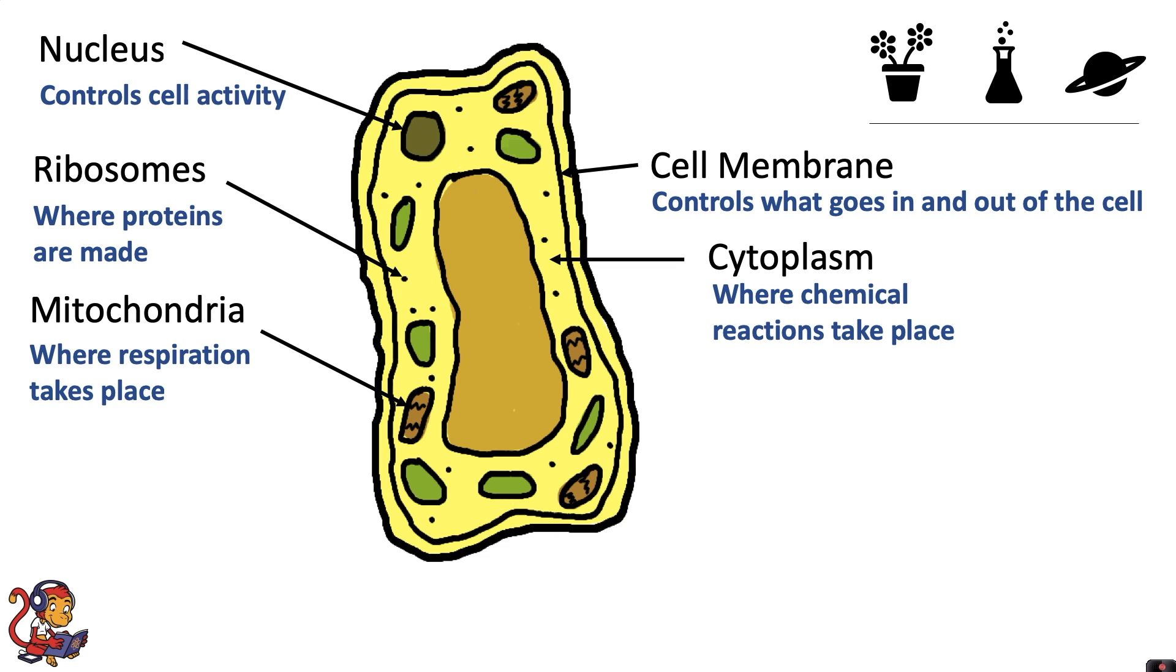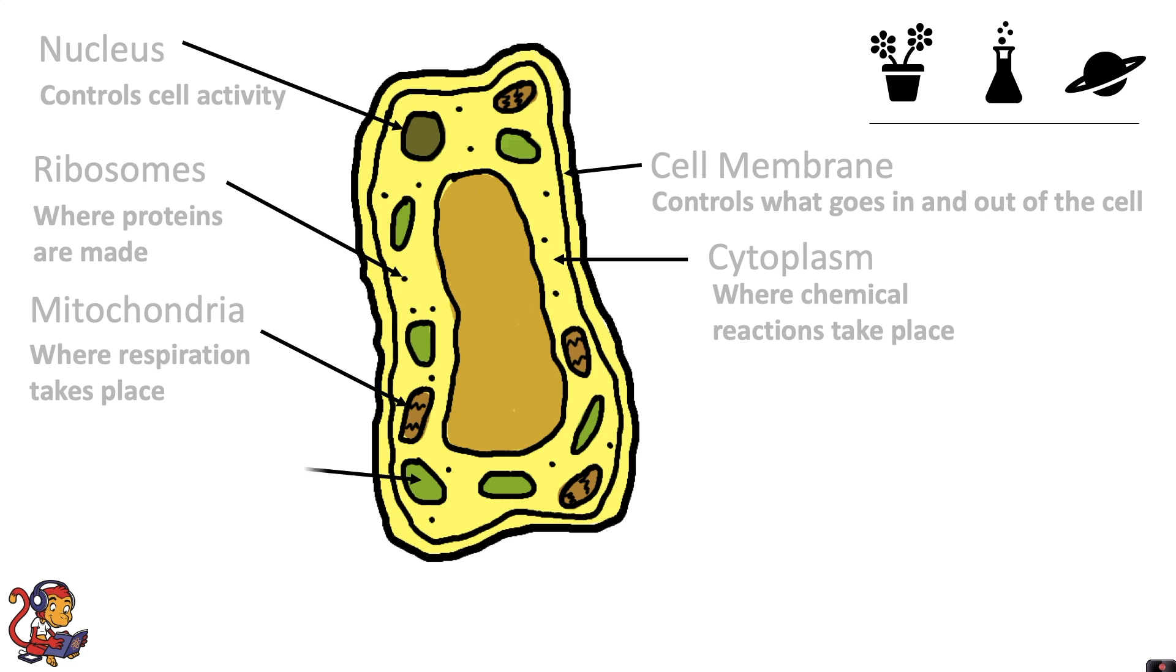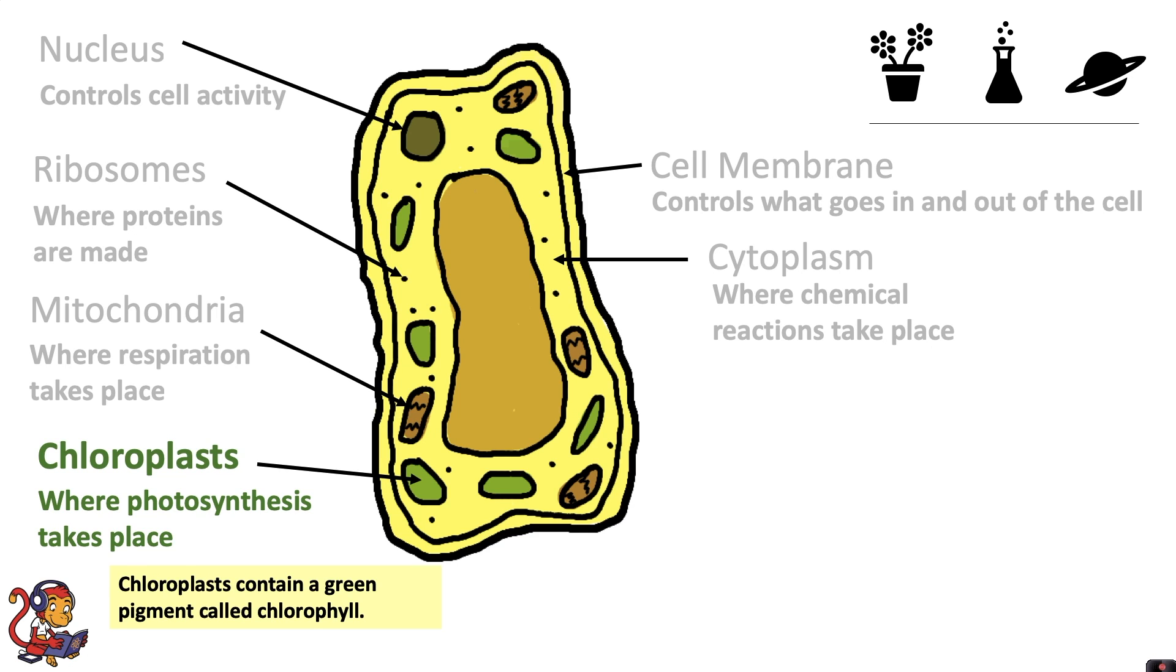In addition to these parts, the plant cell also has three other parts that you need to know about. Firstly, it has chloroplasts and this is where photosynthesis takes place. The chloroplasts are green because they contain a green pigment called chlorophyll.